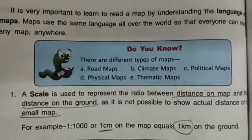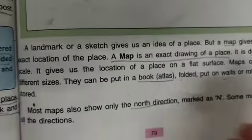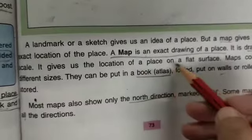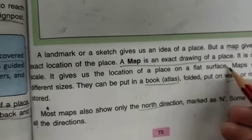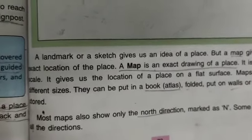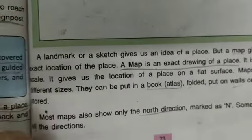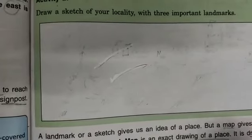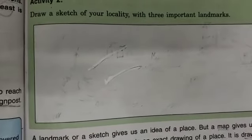Hope you understand about the different types of maps. A map is an exact drawing of a place. There is one activity for you - you will complete the activity and read the paragraph. That's all for the day. Thank you and have a nice day.